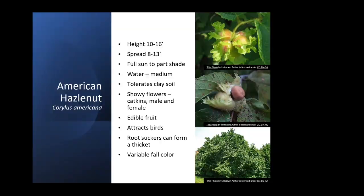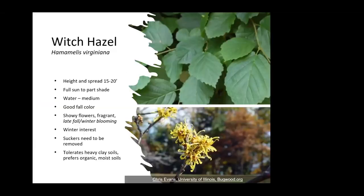Witch hazel is another rather unusual one — the leaves are kind of coarse and it's not necessarily the prettiest leaf. But the main reason you grow it is for the really cool flower that blooms October through December. There are also native-non-native crosses that will bloom even in early winter, like January or February. They can sucker a little bit, so you may need to remove suckers. To me, one of the main interests is just the fall-blooming flowers.